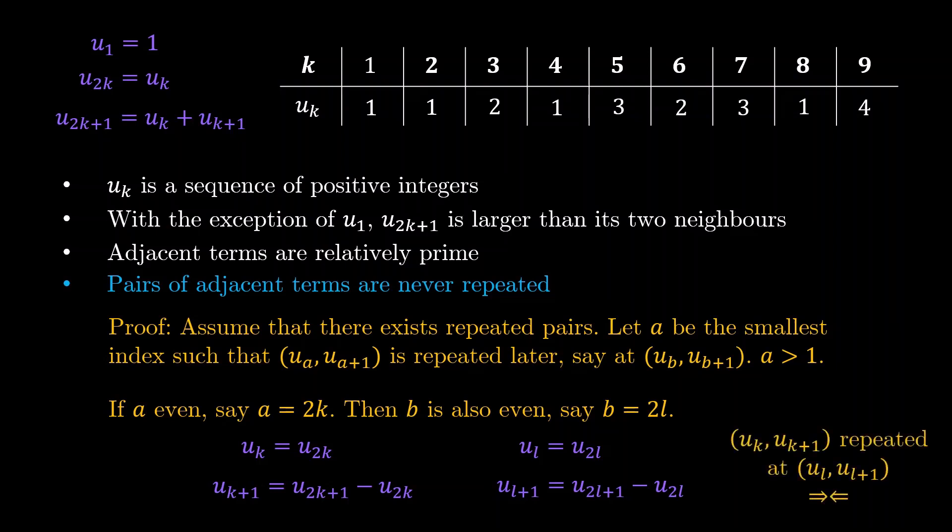What does this mean? This means a contradiction because we have found a smaller index term that again has a pair that is repeated later.